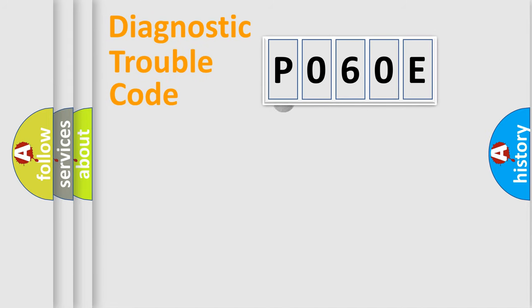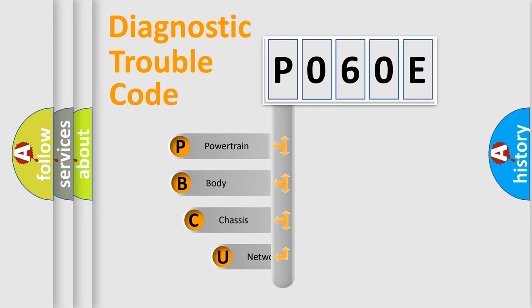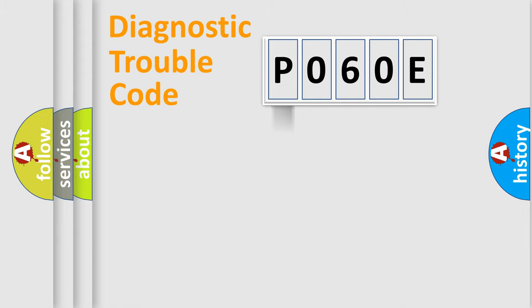First, let's look at the history of diagnostic fault code composition according to the OBD2 protocol, which is unified for all automakers since 2000. We divide the electric system of automobile into four basic units: Powertrain, Body, Chassis, and Network.